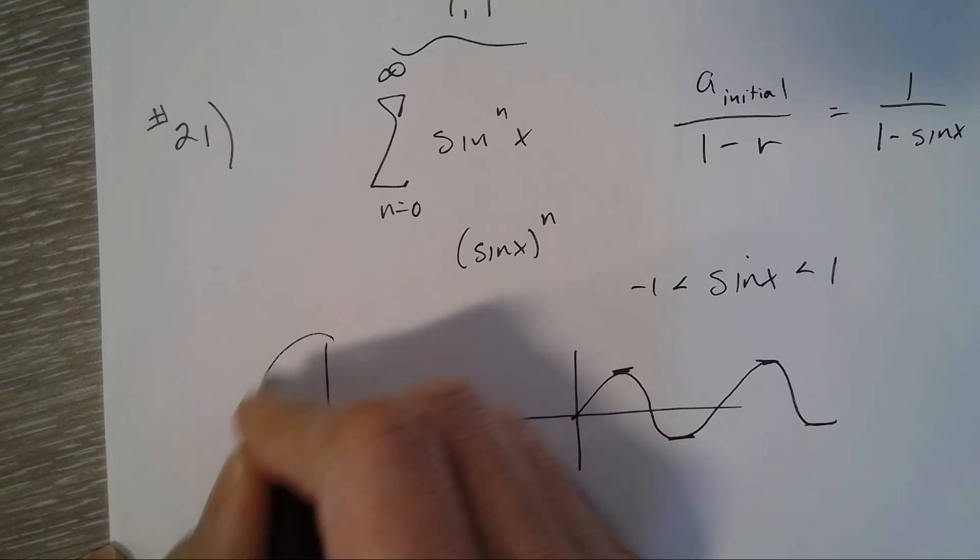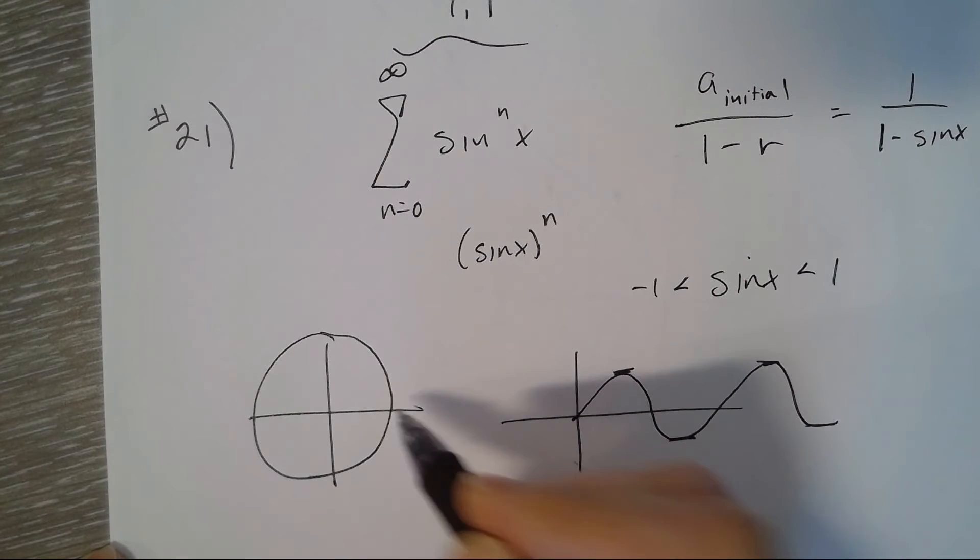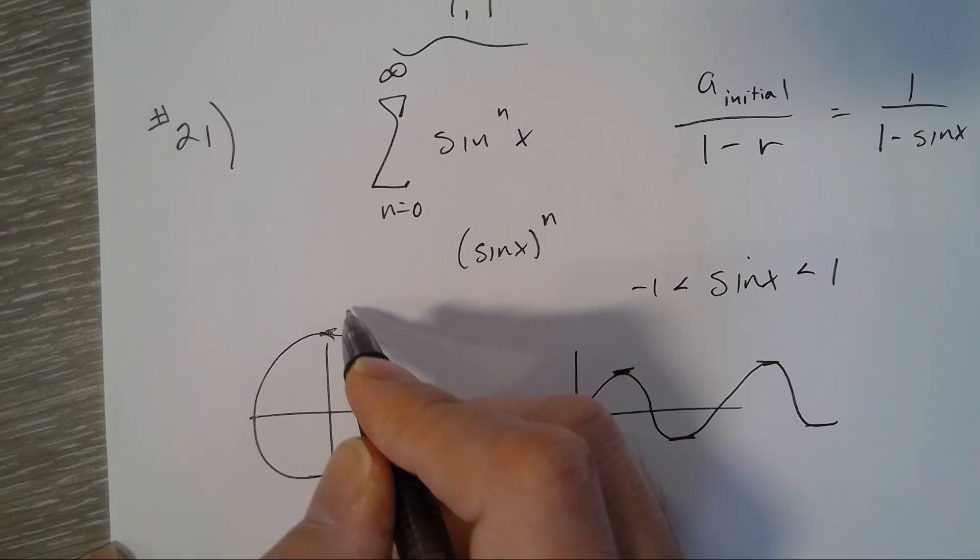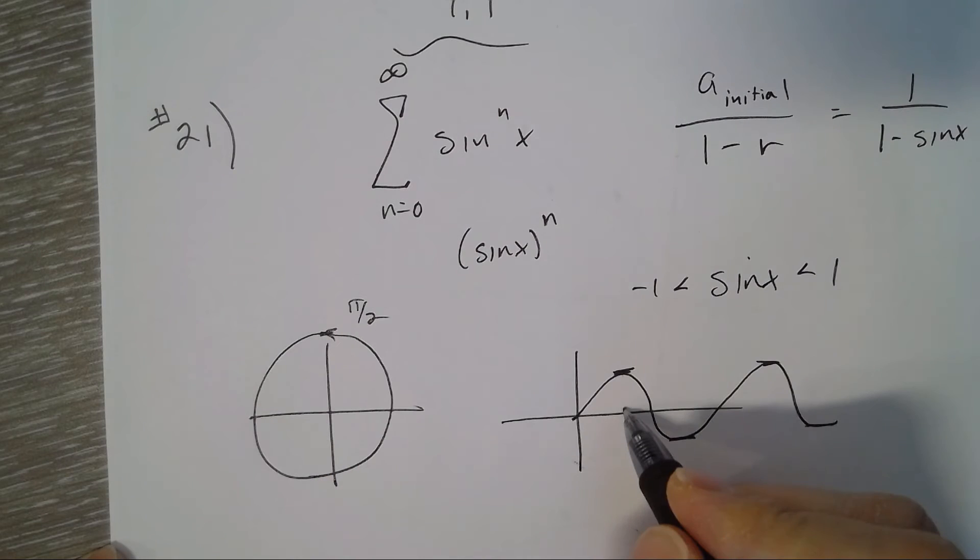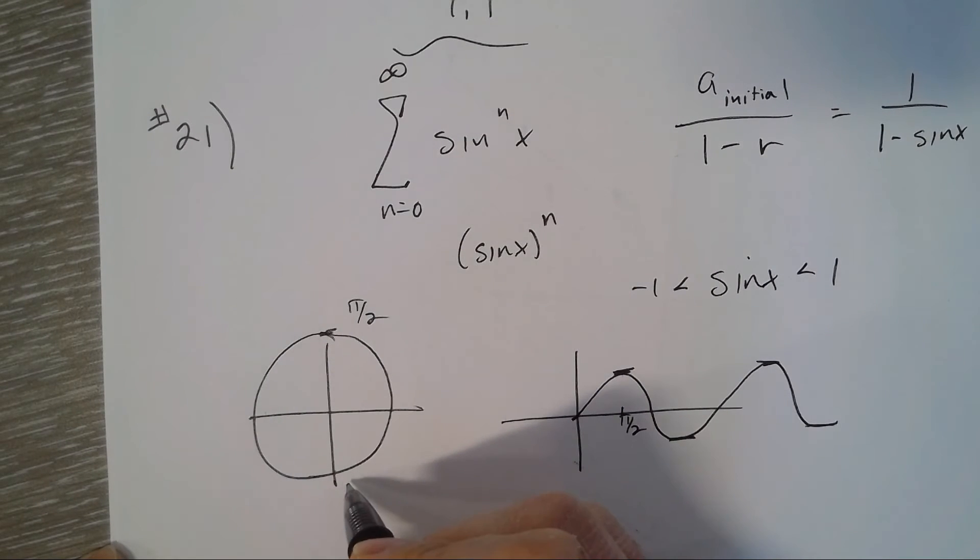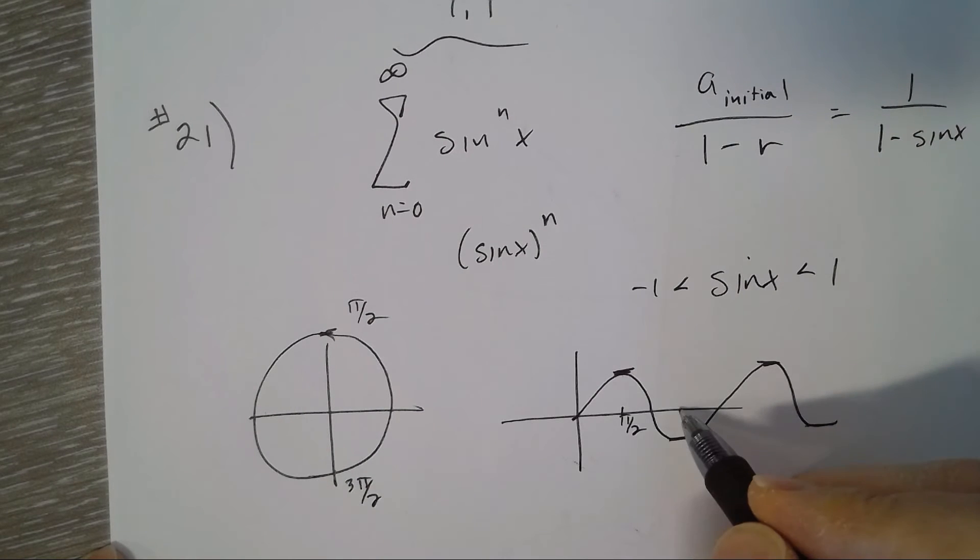And so we need it will converge everywhere except when it's 1 or negative 1. On that unit circle, you can think of it as where's sine x? Sine is the y value, so right here at π over 2, this would be π over 2. And then right here at 3π over 2, that's when it's negative 1.